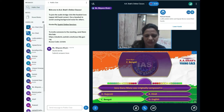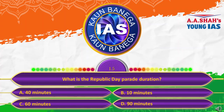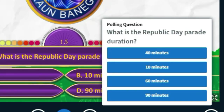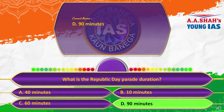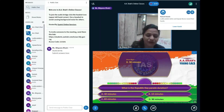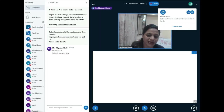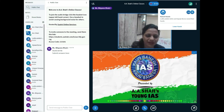The 15th and final question of this level: What is the Republic Day Parade duration? A, 40 minutes; B, 10 minutes; C, 60 minutes; or D, 90 minutes. The correct answer is D, 90 minutes. This completes our level 1. I hope you all gained a lot of information about our country, Republic Day, our flag, our national anthem, and the constitution.